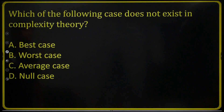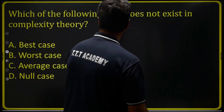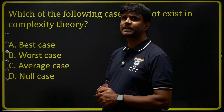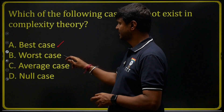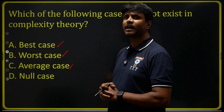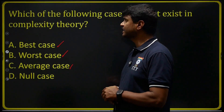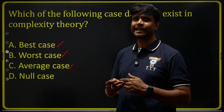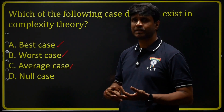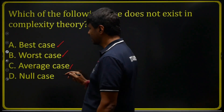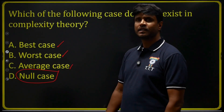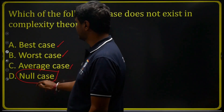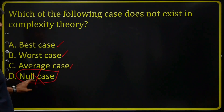Next question: which of the following does not exist in algorithm complexity cases? When it comes to an algorithm, there are three types of cases: best case, worst case, and average case. These are the different time complexity types we have. But we don't have a null case — null case is not defined. So the correct answer is null case.